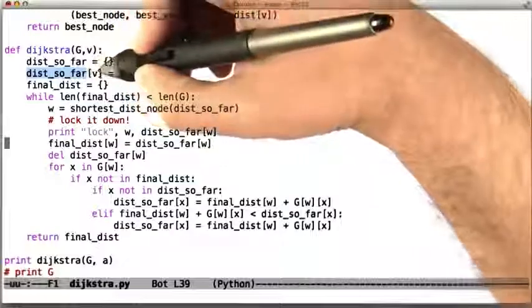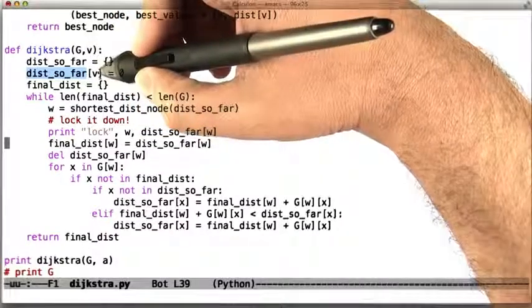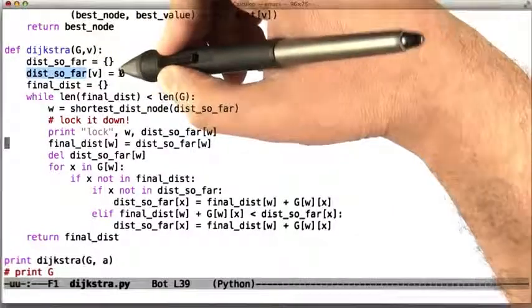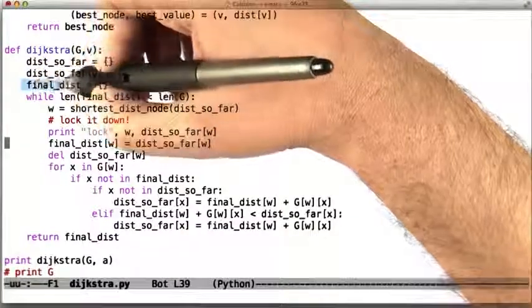Then we start that structure off by saying the distance that we know of so far from V to V, the node that we started at, is 0. We did that in the hand simulation as well.